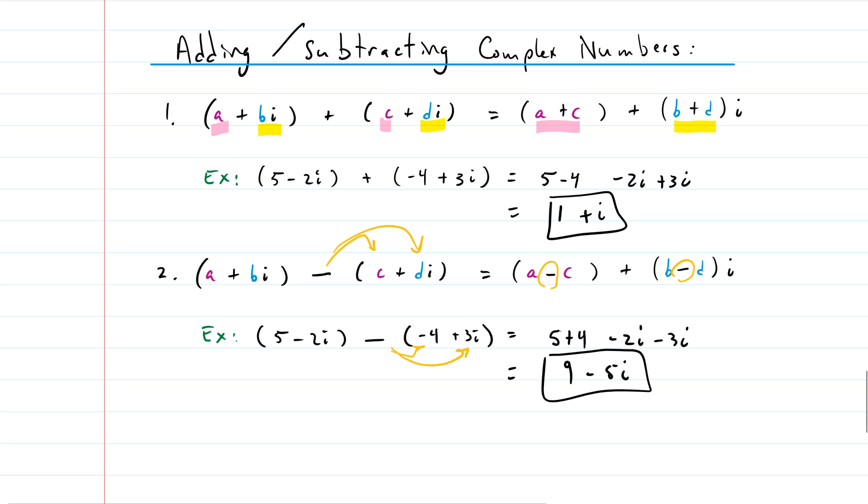So adding and subtracting complex numbers is really simple. You add all the real parts and or subtract, add or subtract, and then you add or subtract the imaginary parts, and then you put them in standard form, which means a plus bi. So here we have a plus or minus bi. There we go. If this was helpful, leave a comment, like the video, or subscribe to the channel. Thanks for watching.